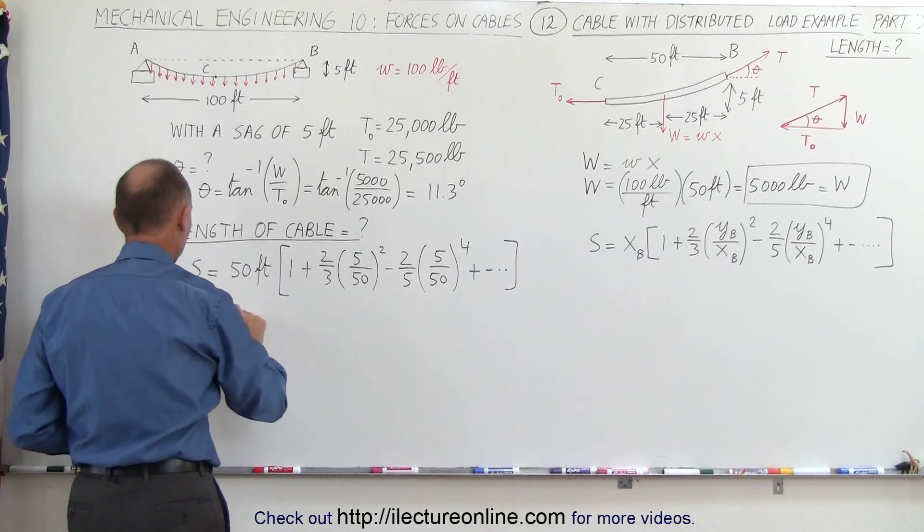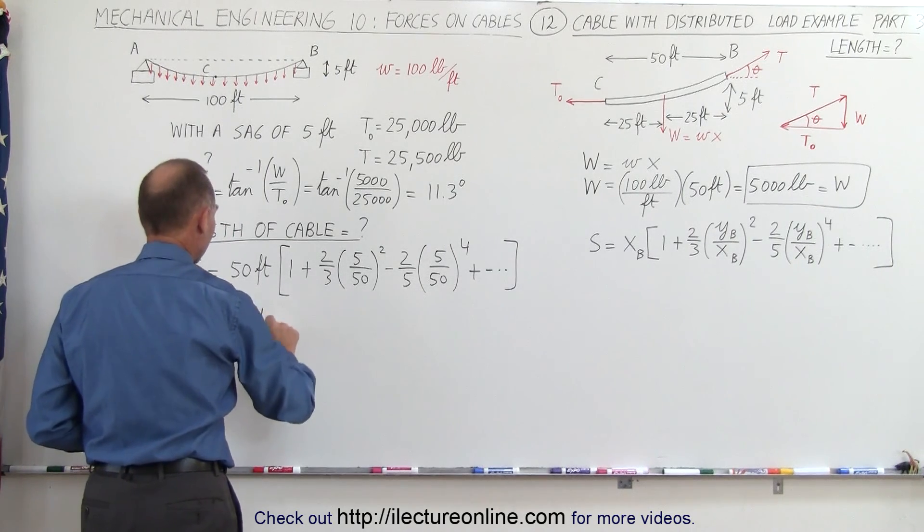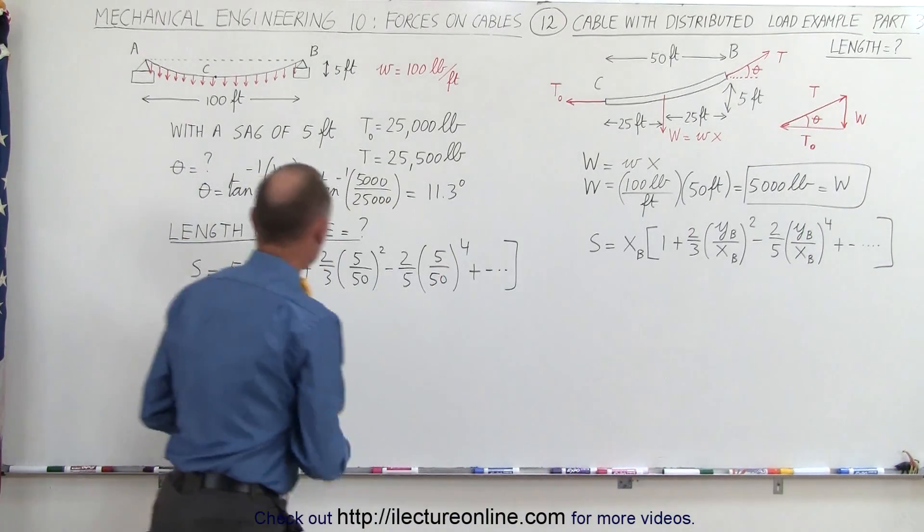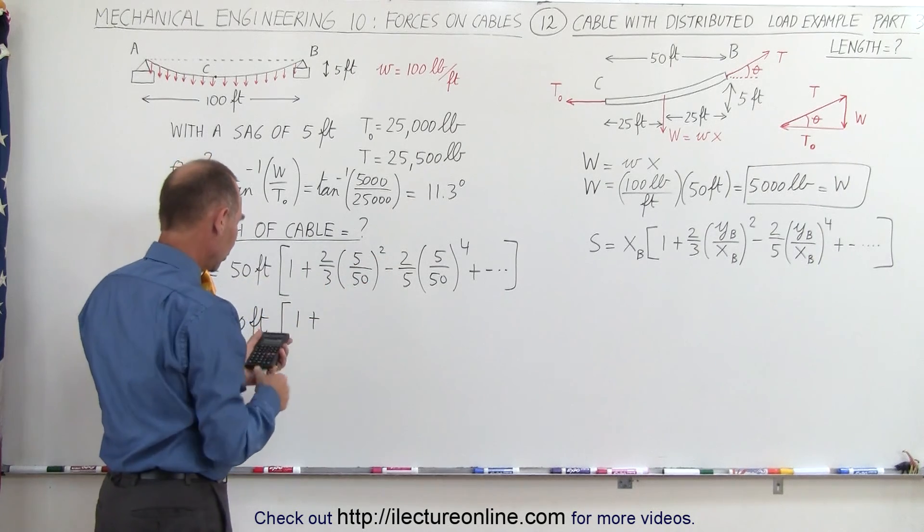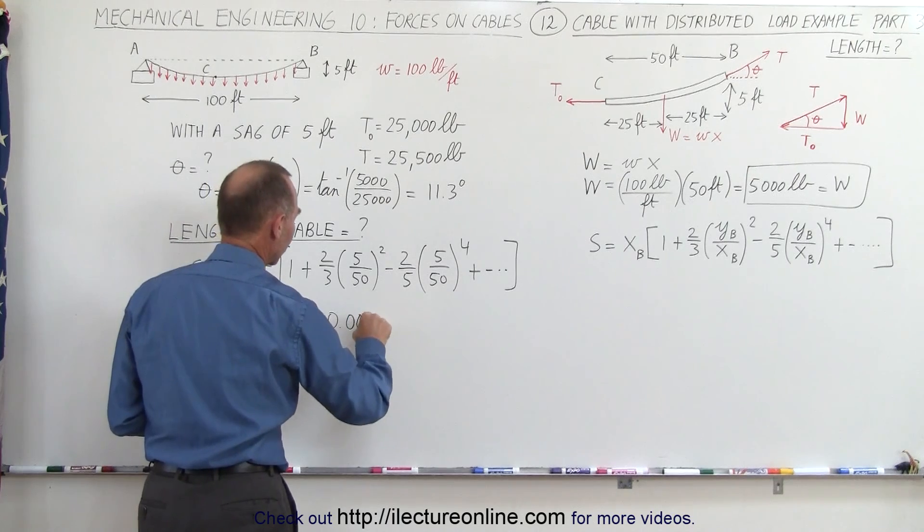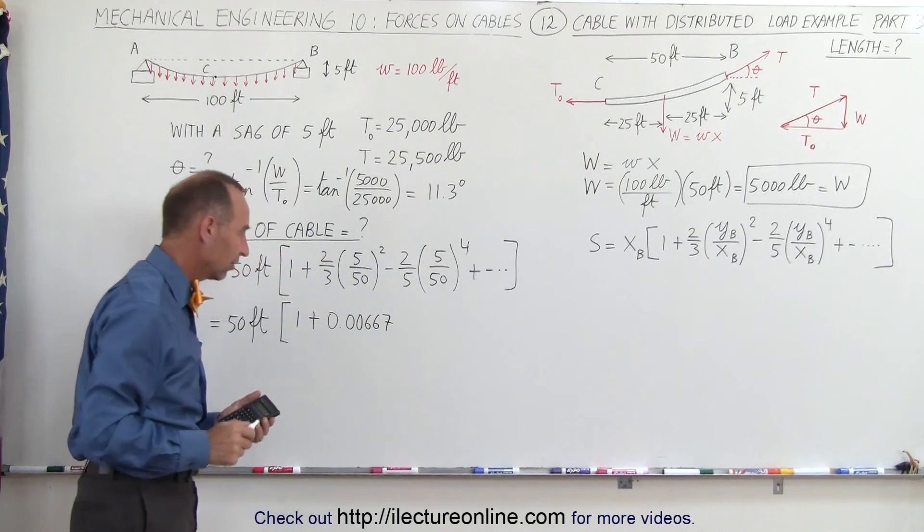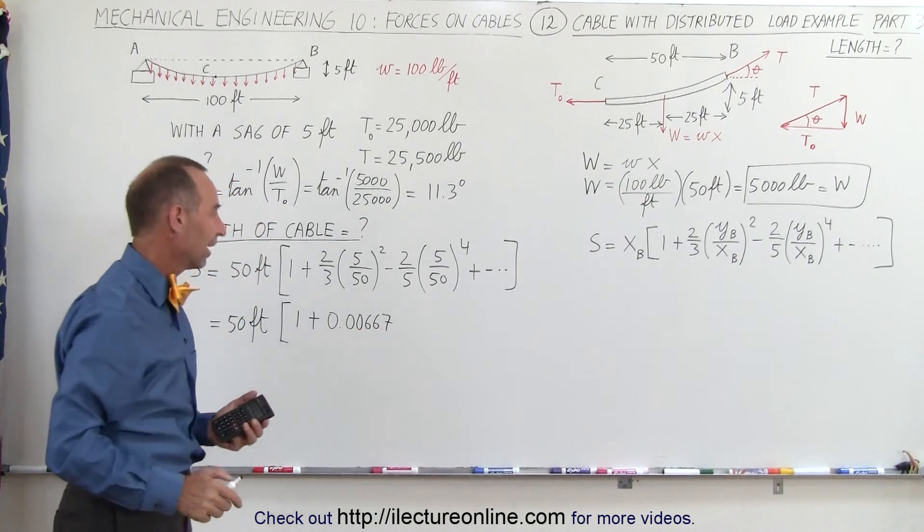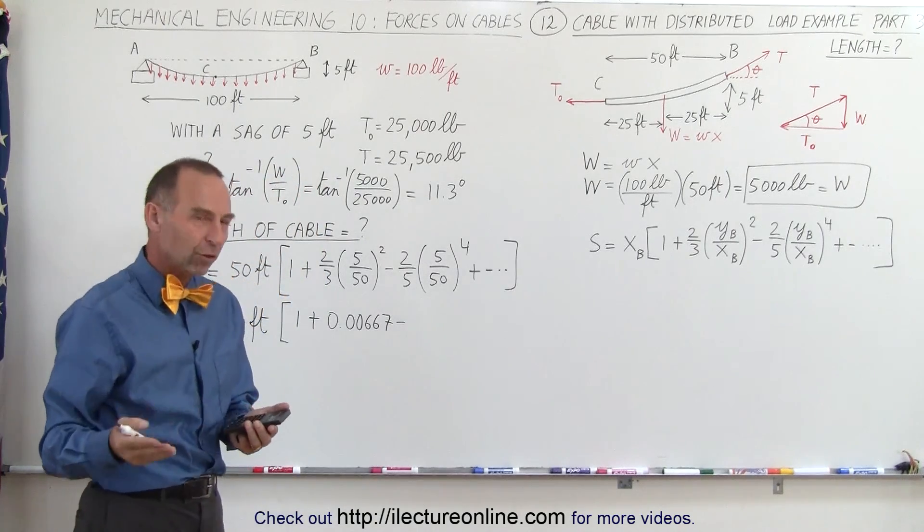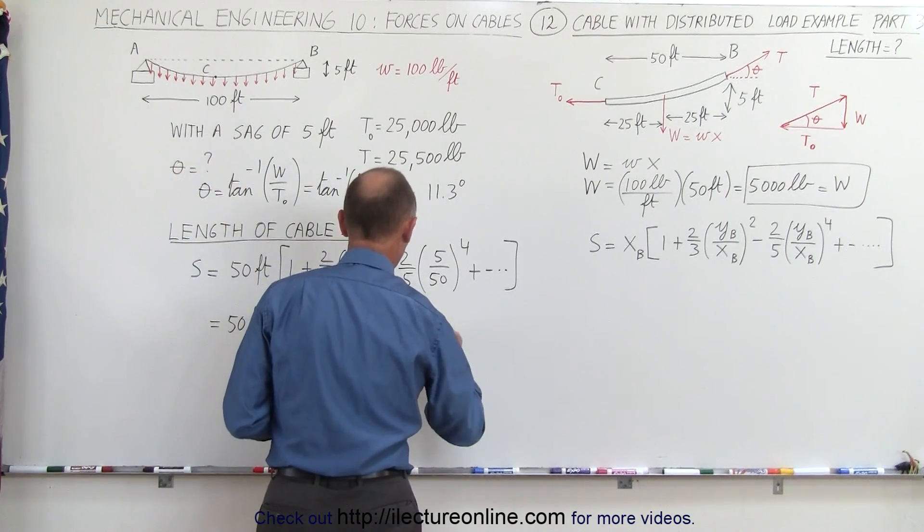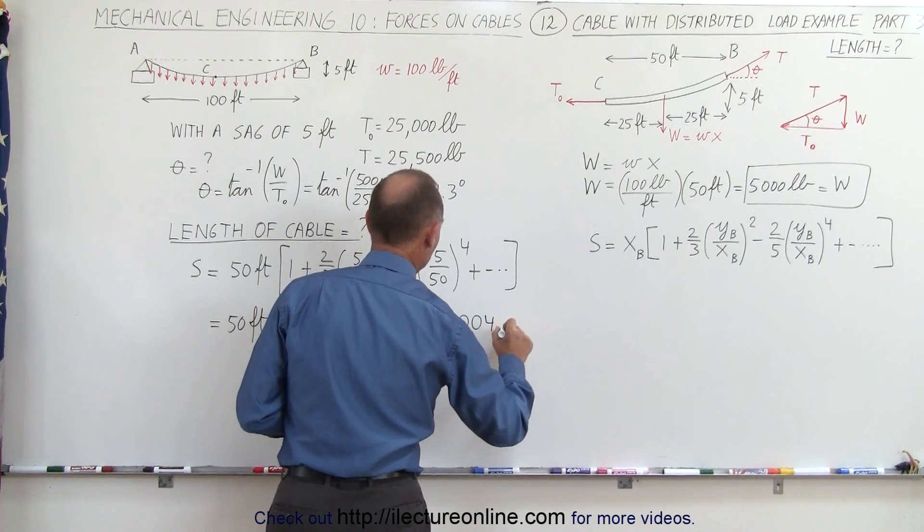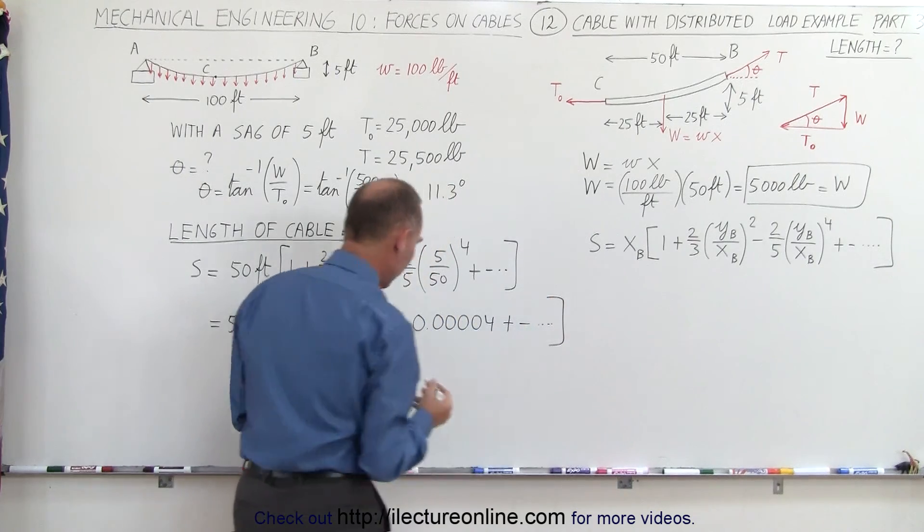Let's calculate what these are and see what we get. So this is 50 feet times the quantity of 1 plus. Well that would be, let's see here. That would be 1 tenth squared is 1/100 times 2 thirds. Well, that would be 0.00667 to three decimal places, or I should say three significant figures. And then here that would be minus 1/10,000 times 2 fifths, which is 0.4. That would be minus 0.00004.